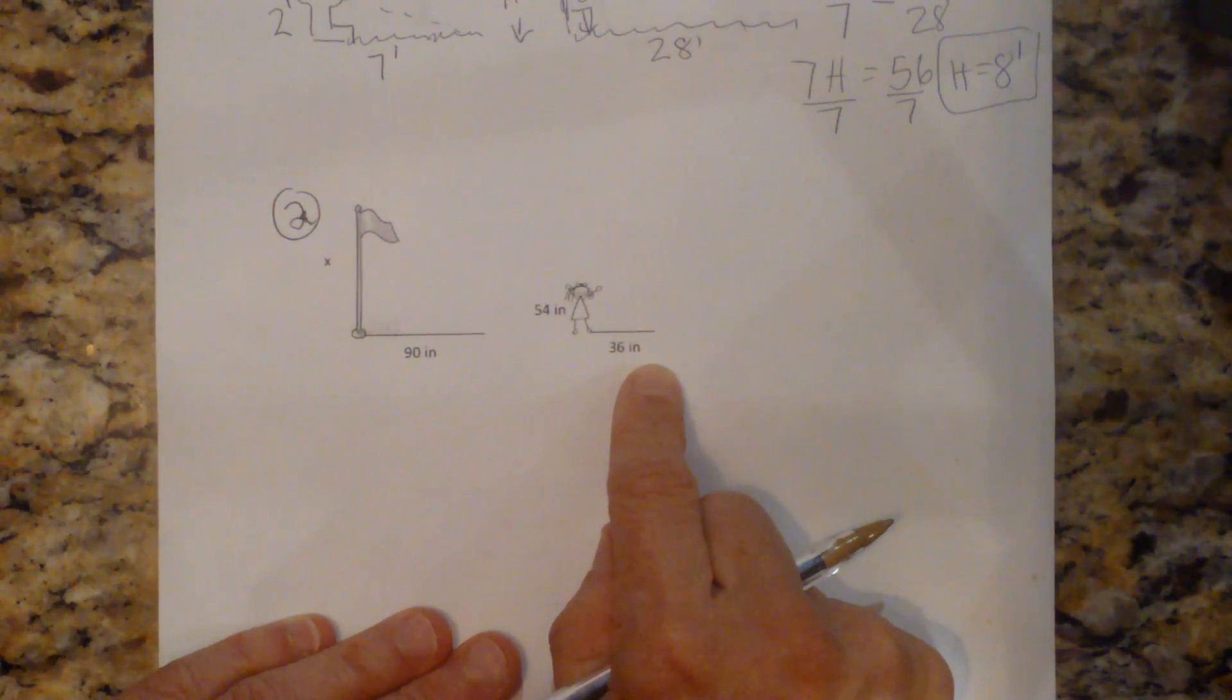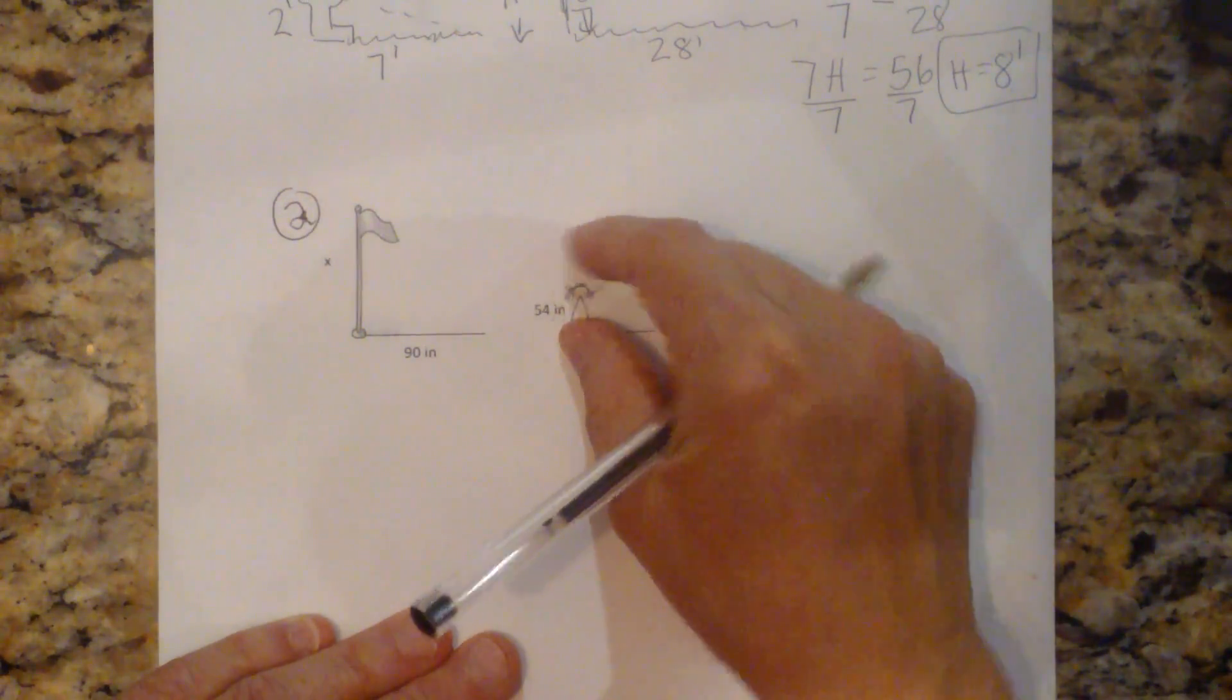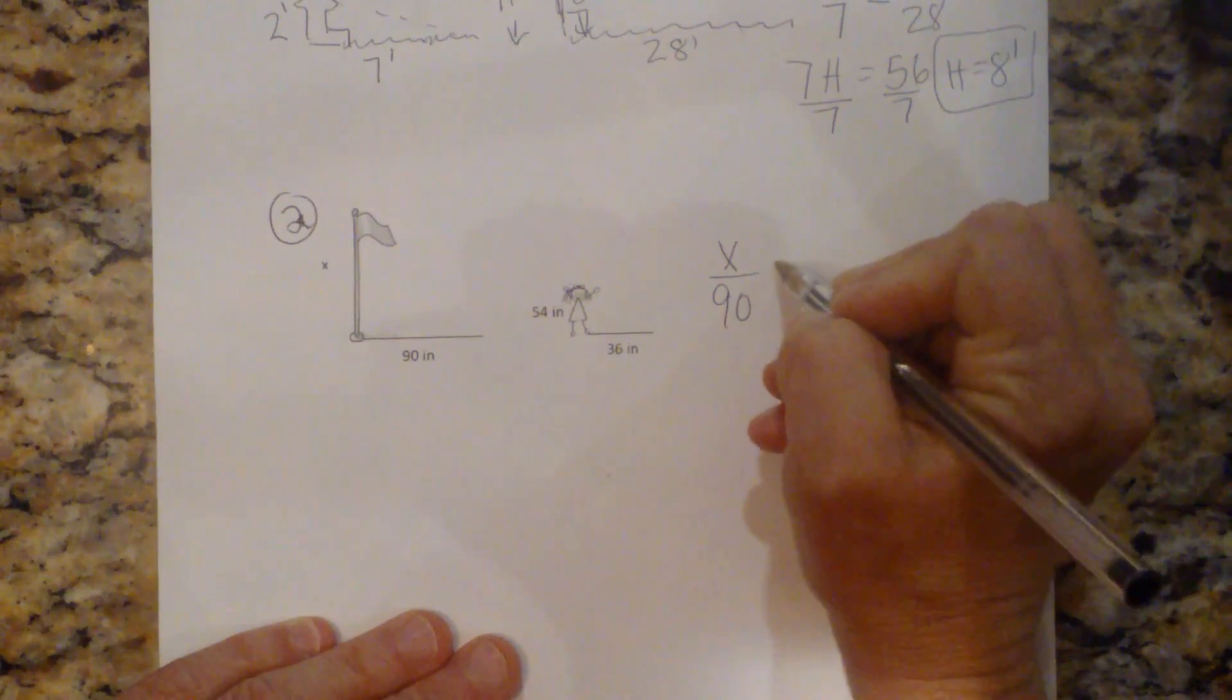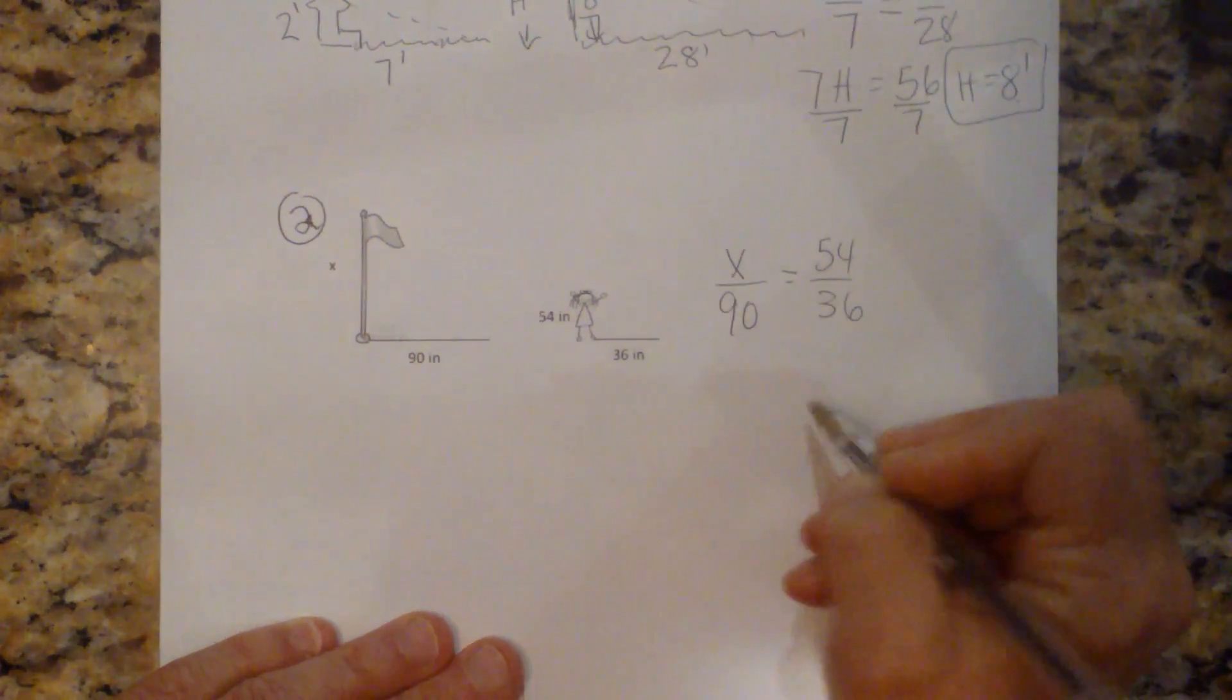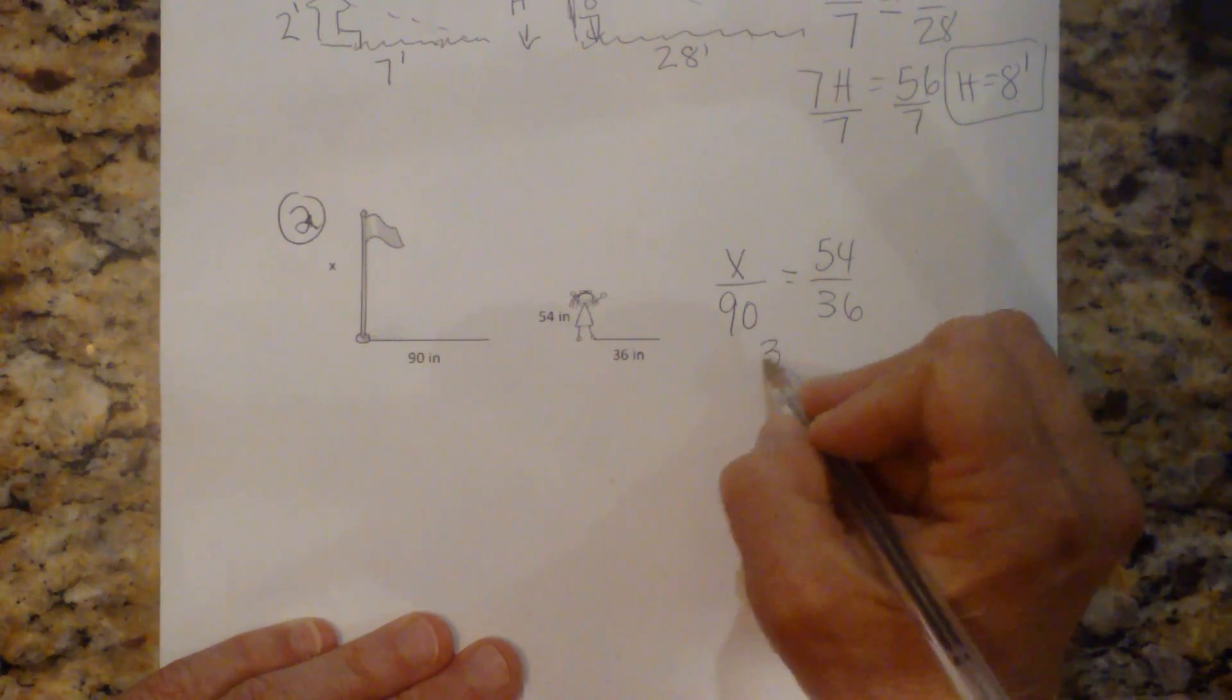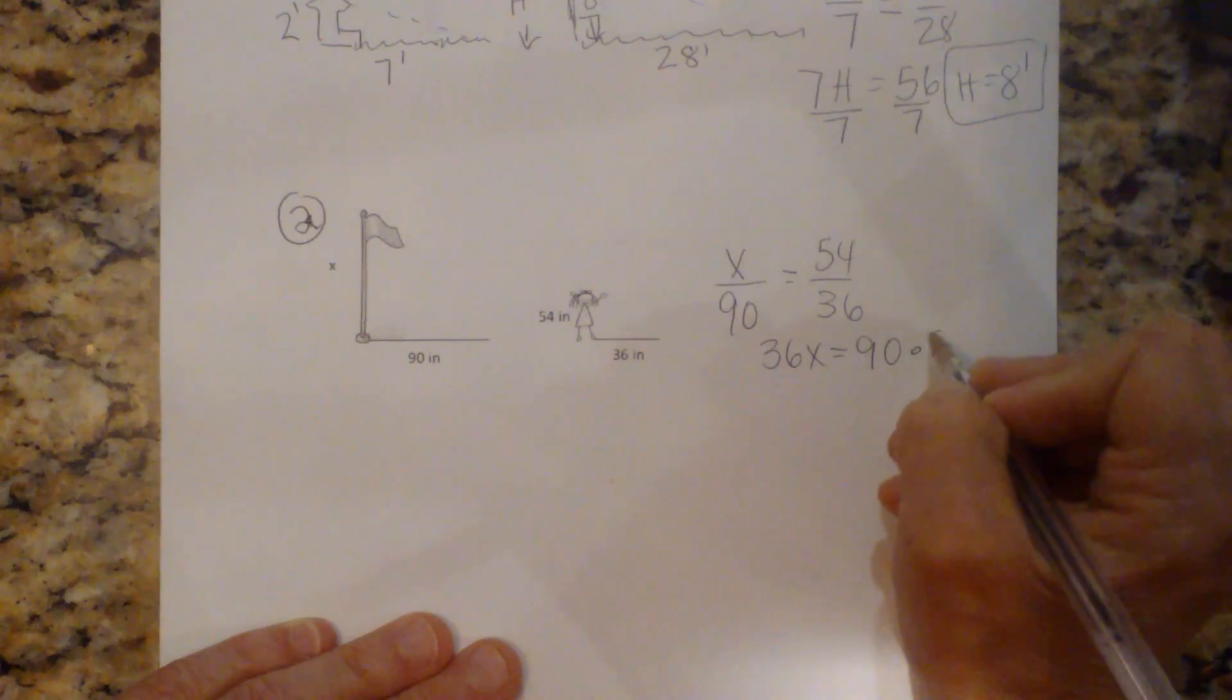So again, we're going to set up a proportion. So the height over the shadow is equal to the height over the shadow. So x is to 90 as 54 is to 36. And again, we're going to do a cross product. So x times 36 is 36x. And we're going to take 90 times 54.